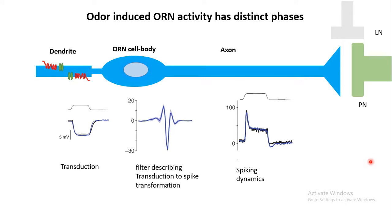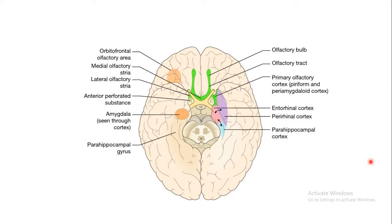From the projection neuron — the mitral cell or the tufted cell — the information is projected to higher brain centers. The olfactory cortex is the most important destination; the most important part is the piriform cortex. Some parts of the entorhinal cortex, perirhinal cortex, and some parts of the amygdala are also important for higher olfactory processing.